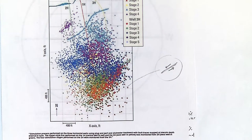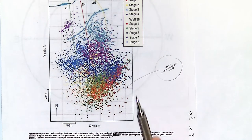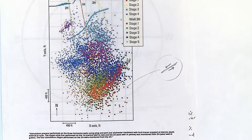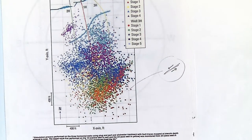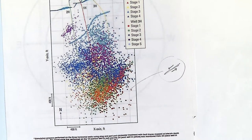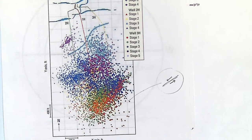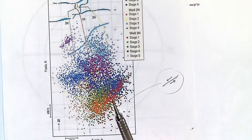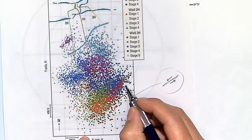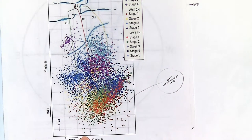If there was shear reactivation, it means the stress has changed — either because pore pressure changed or stresses changed at that location, causing a microseismic event. I'm not asking for very accurate answers here; you just need to know how to interpret these plots and identify the size of the stimulated zone.